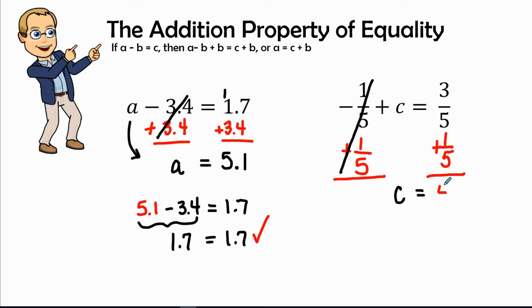All right, let's go ahead and check our work. So here we go, I have a negative one fifth plus c. We know that c equals four fifths, so wherever I see a c, I'm going to insert a four fifths. Therefore, this is all supposed to equal three fifths.